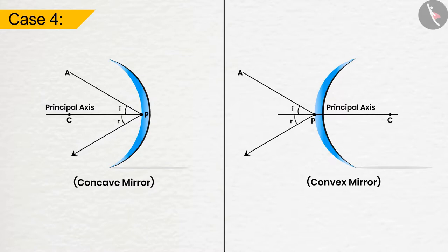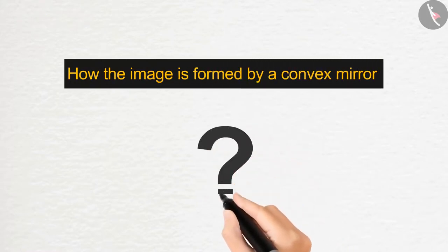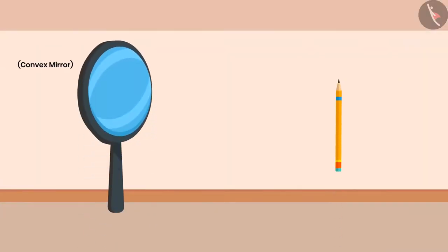Now Rahul will show you an activity for how the image is formed by a convex mirror. To understand the image formation by convex mirror, a convex mirror and a pencil will be required. Hold the mirror like this in one hand and place the pencil in front of the mirror in the other hand. Now look carefully in the mirror.